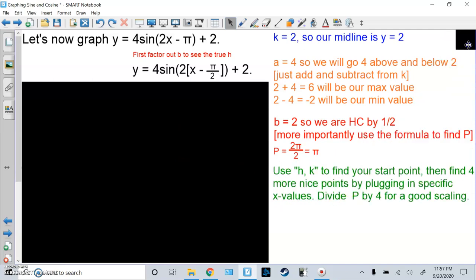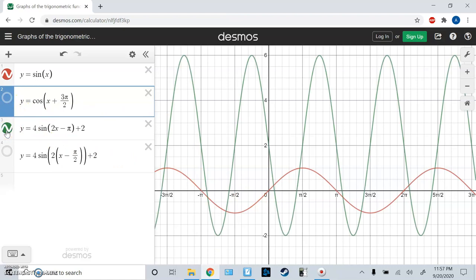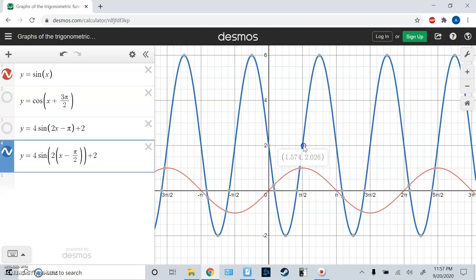Then, last, you're going to use h k to find your starting point. Then, you're going to find four more nice points by plugging specific x values. To find that, divide p by 4 for a good scaling. So, here's our original. I told you, I factored out the 2, and it's going to be the same picture. Notice, we are right pi over 2 up 2. So pi over 2, 2 is right. It's our starting point. So the origin moved here.